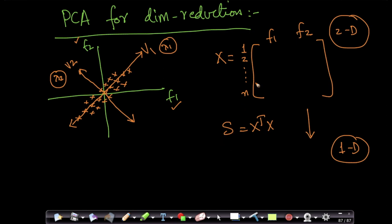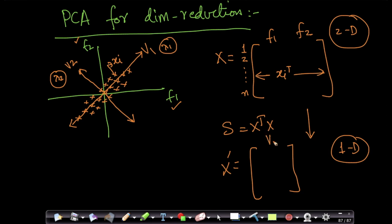Given a point xi, converting to 1D is very simple. I create a new dataset x_dash which is one-dimensional, where the single dimension is v1. I have n points, and my i-th point xi_dash is just a scalar — it is nothing but xi-transpose times v1.